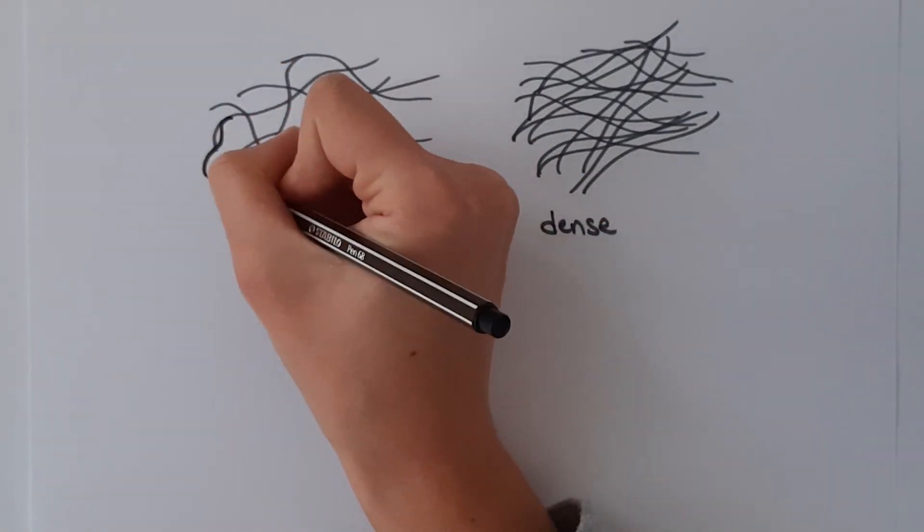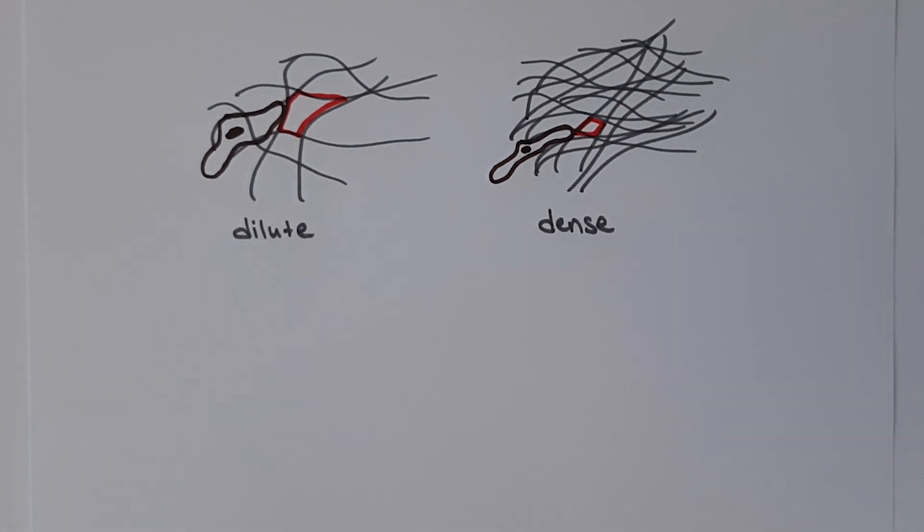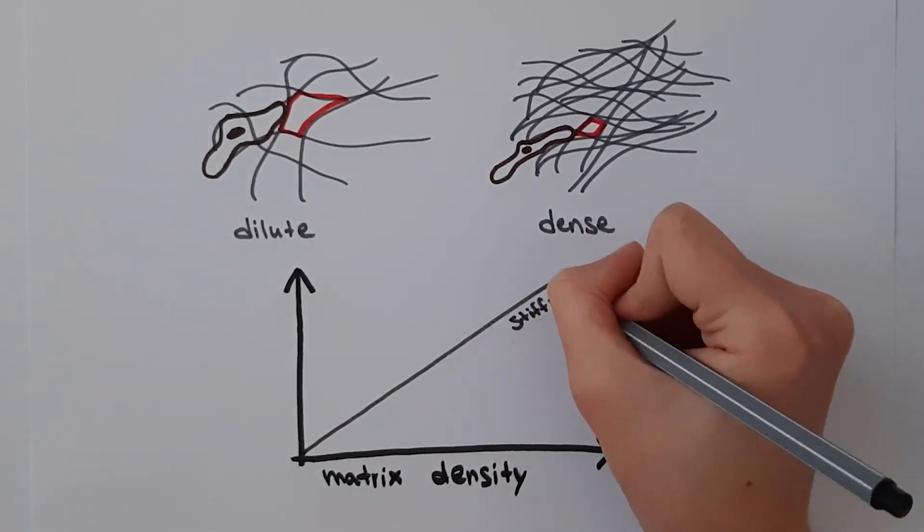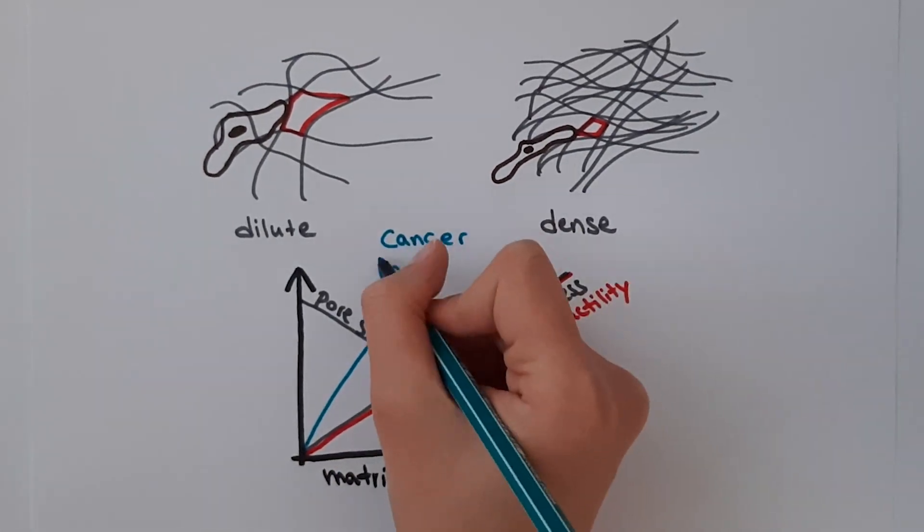However, for very dense ECM organizations, cell invasiveness decreases again, since the small pore sizes in combination with the very high stiffness provide severe restrictions to the migrating cells. This generates a biphasic response of cell invasion to matrix stiffness.